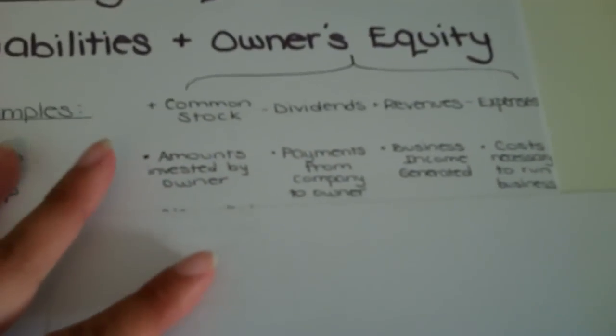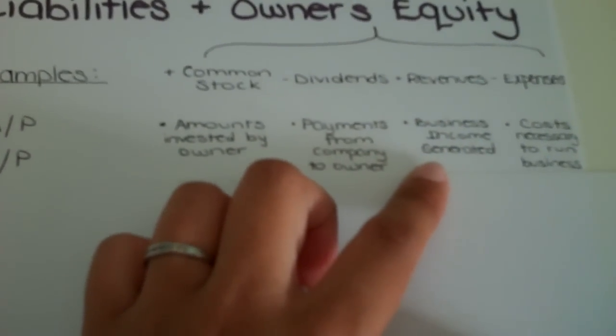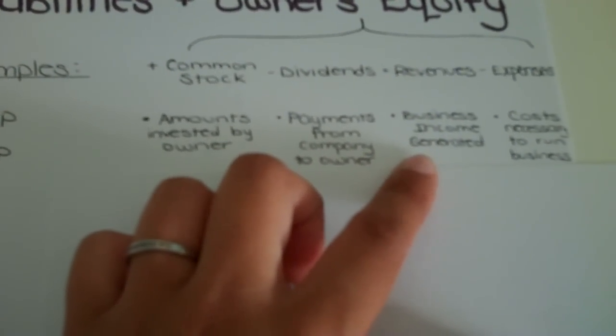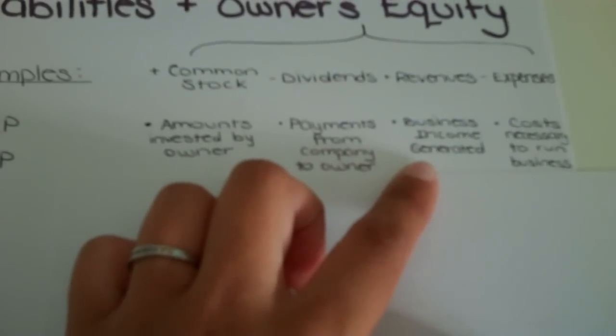Dividends. Those are payments from the company to the owner. Revenue. Well, that's basically all the income that the company is generating through its sales of its products or selling of its services.